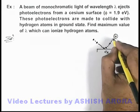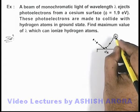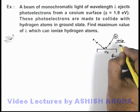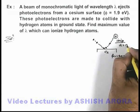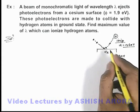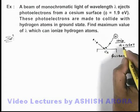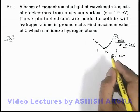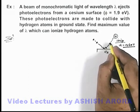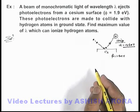We require that the hydrogen atom on collision with these photoelectrons should get ionized. To ionize, we know its ionization energy is 13.6 electron volts. That means the maximum kinetic energy of these photoelectrons must be at least 13.6 electron volts or higher than this. Then we can say that these photoelectrons can ionize the hydrogen atom or all hydrogen atoms in the gas.